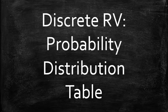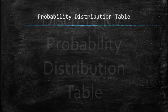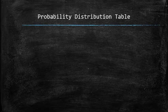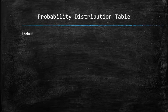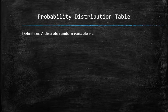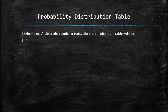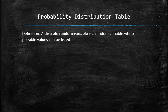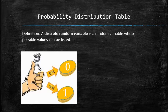Next, we will focus on discrete random variables, their properties and applications. Let's recall the definition: a discrete random variable is a random variable whose possible values can be listed. Consider tossing a coin with 0 assigned to heads and 1 to tails, and let x be the outcome of the experiment.